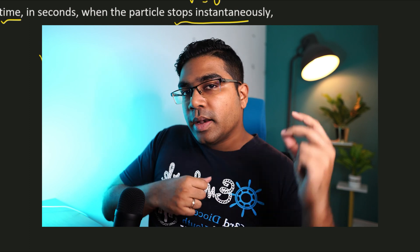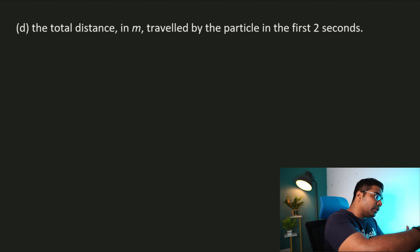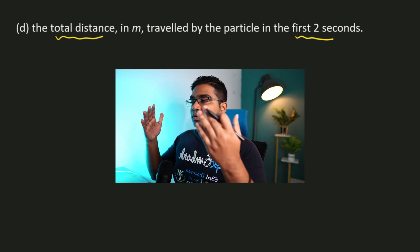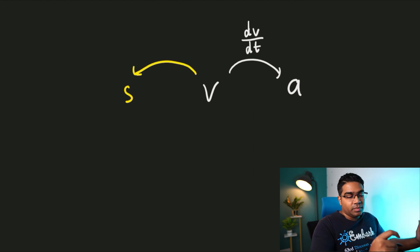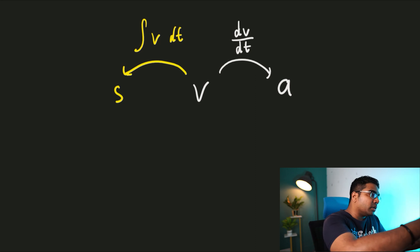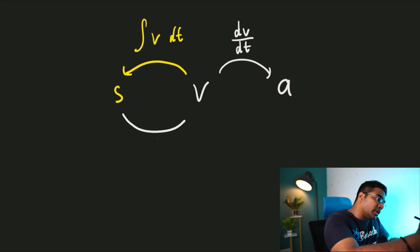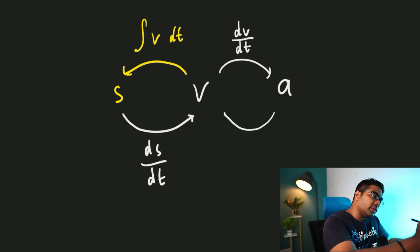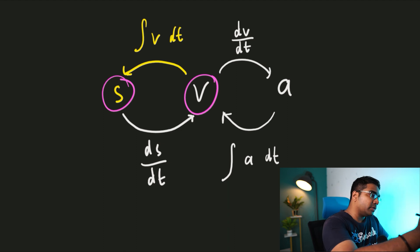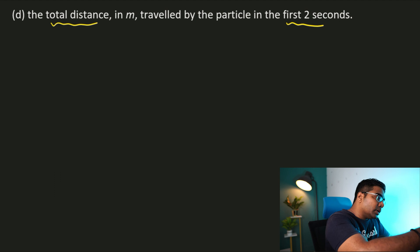We've covered velocity and acceleration. Now let's look at displacement. We need to find the total distance traveled by the particle in the first 2 seconds. We have velocity — how do we go to distance? When going from velocity to displacement, we need to integrate velocity with respect to time. Integration is the reverse of differentiation: going from displacement to velocity is differentiation, and going from acceleration back to velocity is integration of acceleration with respect to time.